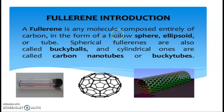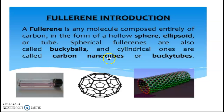Fullerenes are any molecule composed entirely of carbon, having a structure such as a hollow sphere, ellipsoid, or tubical ellipsoid. In nature, spherical fullerenes are called Buckyballs and the cylindrical ones are called carbon nanotubes or Buckytubes. These are the images to explain Buckyballs and Buckytubes.